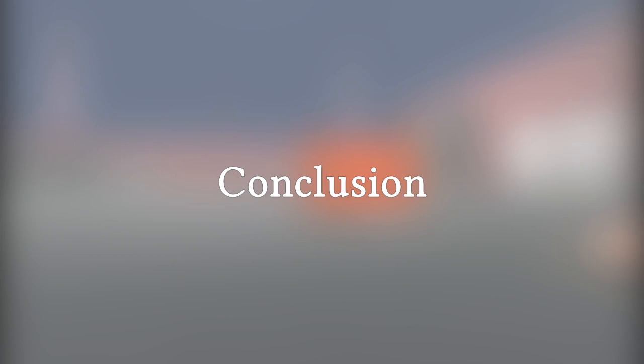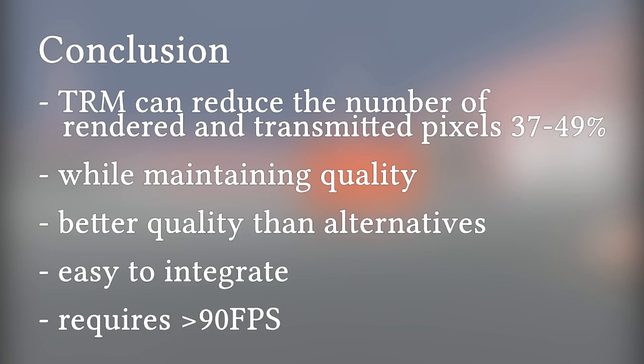We proposed a technique that can reduce the number of rendered and transmitted pixels by 37–49%, while maintaining quality close to the original. We explained why our technique is more efficient and produces better quality than alternatives such as black frame insertion, purely motion-sharpening-based approaches, NCSFI, and reprojection. The method is easy to integrate into existing VR pipelines, but it does require presentation at least 90 frames per second.